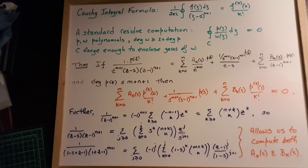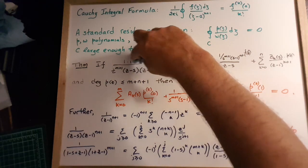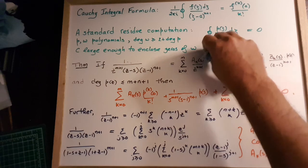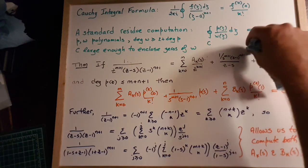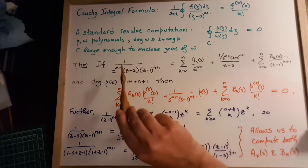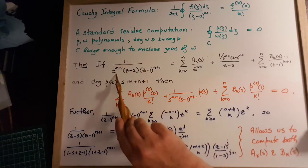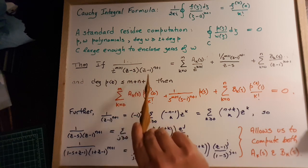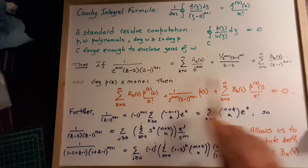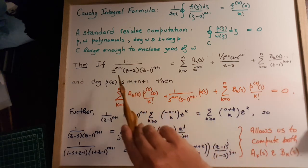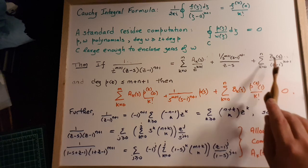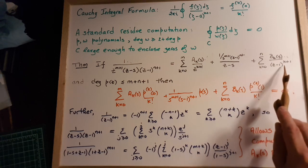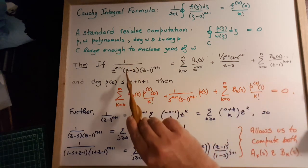So what is going to happen here is we are going to find a partial fraction decomposition of a simple function where we know all the factors on the bottom: z to the n plus 1, z minus s, z minus 1 to the n plus 1. A straightforward partial fraction decomposition gives us something over all the powers from z up to z to the n plus 1, some coefficients over all powers from z minus 1 up to z minus 1 to the n plus 1, and something over z minus s.